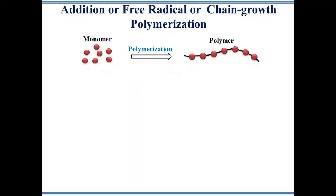Polymers are made by joining monomers in a linear chain. The process of making polymers from monomers is known as polymerization. Based on reaction kinetics, polymerization reactions can be classified into addition and condensation polymerization.